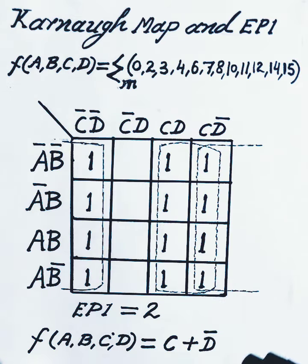So EPI equal to 2, and also EPI terms appear in final function f(A,B,C,D) equal to C plus D complement.